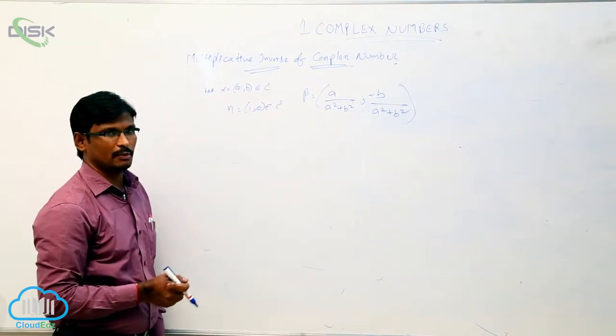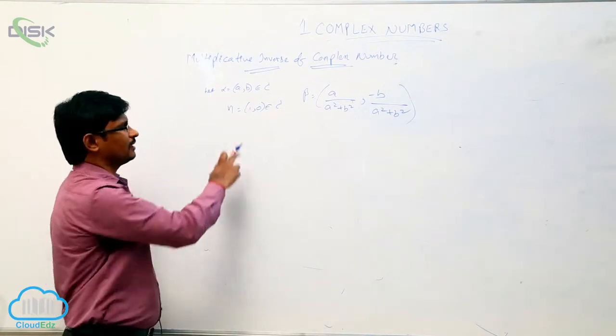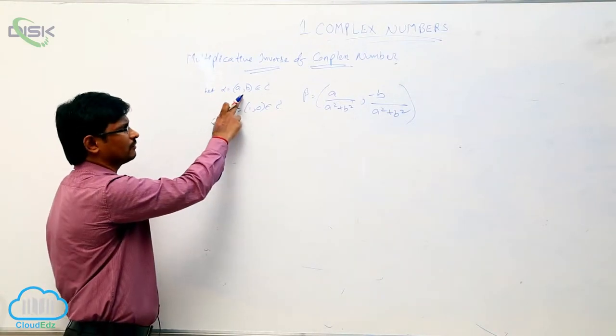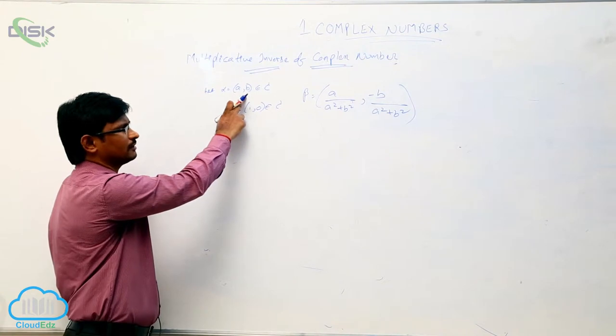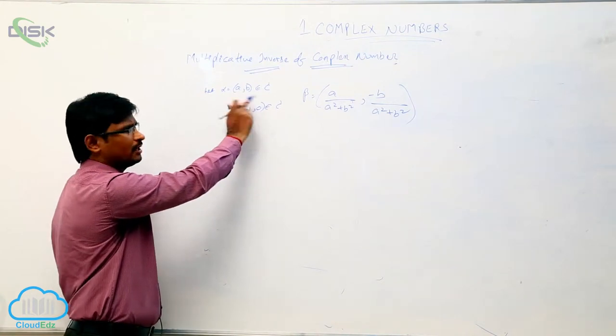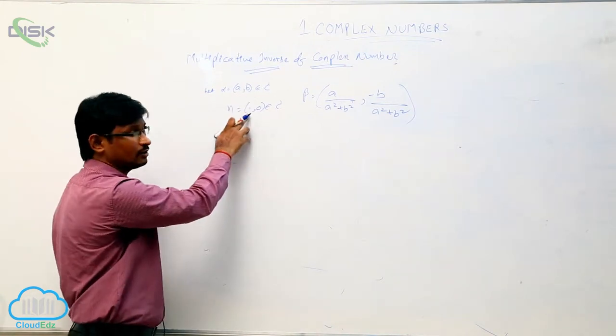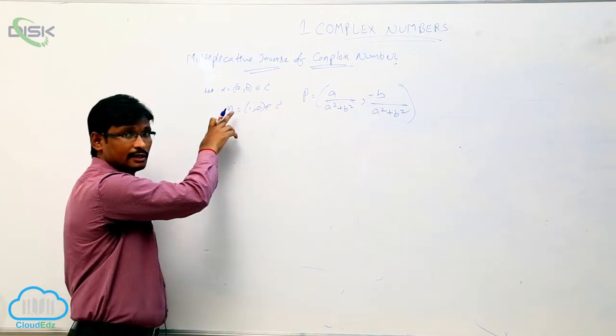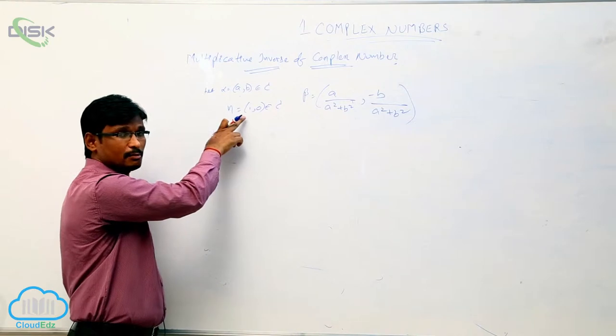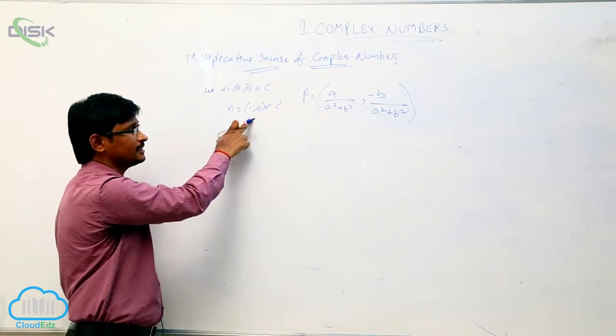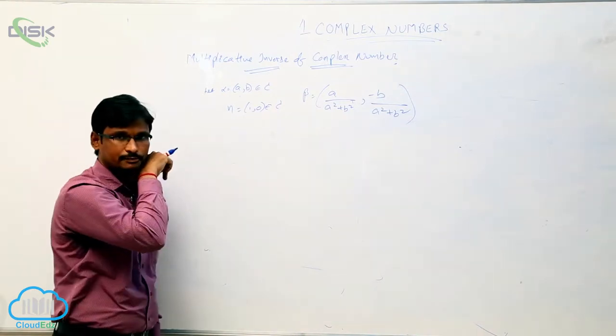We will see the multiplicative inverse of the complex number. Let alpha = (a, b) belong to the complex numbers, and we know that in complex numbers, the multiplicative identity is (1, 0).